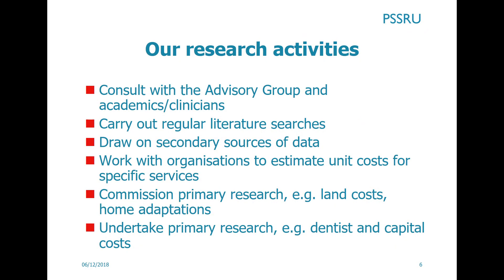So how do we find all our information? Our advisory group, who we meet with annually, guides our work and provides valuable leads. This is formed of representatives from the funding bodies, economists and research units, and representatives from the Social Care Institute for Excellence and the National Institute for Health and Care Excellence — SCIE and NICE in short. We search the literature for new studies and draw information from secondary sources of data, as well as working with organisations to estimate unit costs for specific services. Occasionally we commission research.